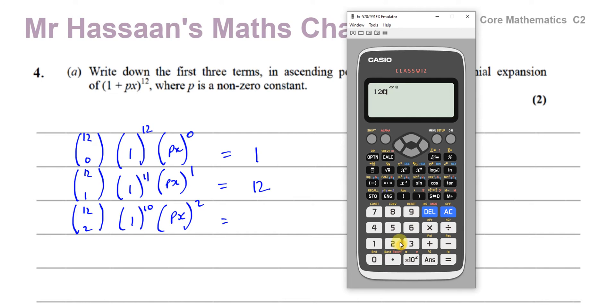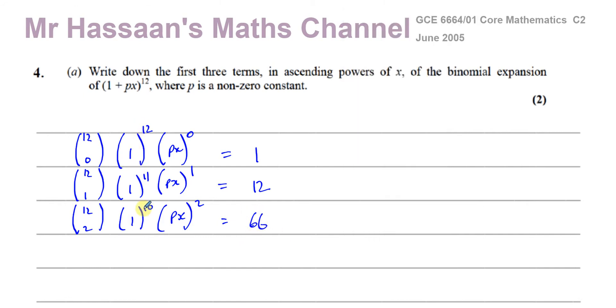So it's NCR, and R is, in this case, going to be 2. So that's going to give me 66. So this is 66. Now, 1 to the power of anything is 1, so all of these will be times 1.